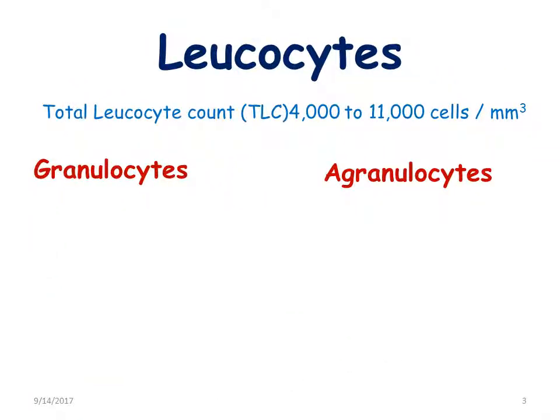The total leukocyte count is around 4,000 to 11,000 cells per cubic millimeter of blood. They are classified into granulocytes and agranulocytes. Identification of the cells is based on the color of the blood cells as observed under the light microscope.